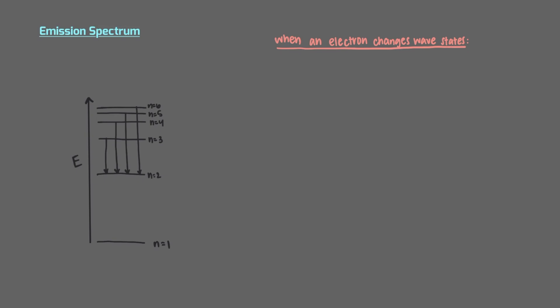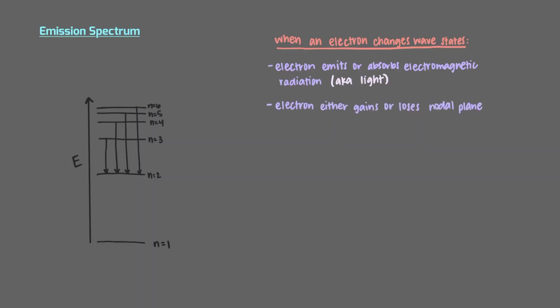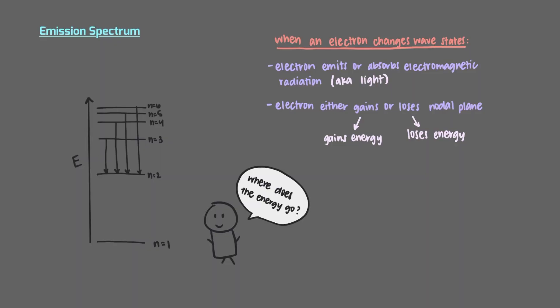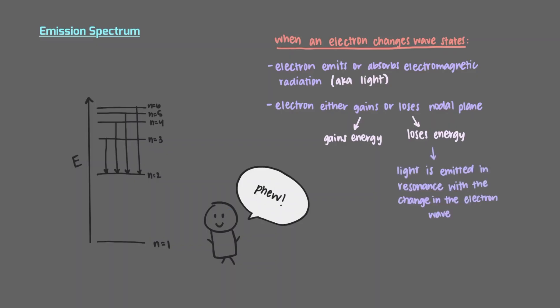When an electron changes from one wave state to another, it emits or absorbs electromagnetic radiation or light. During these processes, the electron either gains or loses a nodal plane. If the electron wave loses a loop, it loses energy. But where does that energy go? Not into a void — it emits light in resonance with the change in the electron wave.